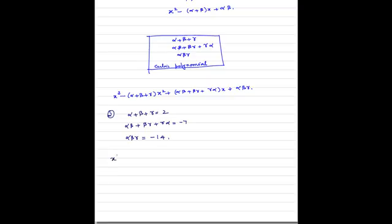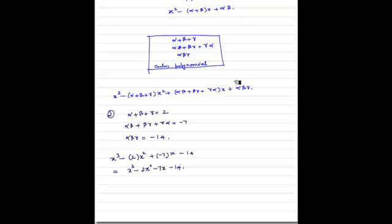Therefore, the cubic polynomial is going to be x cubed minus 2 times x squared plus (minus 7) times x plus (minus 14). So this is going to be x cubed minus 2x squared minus 7x minus 14. That is the cubic polynomial.